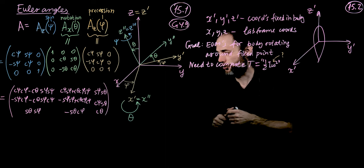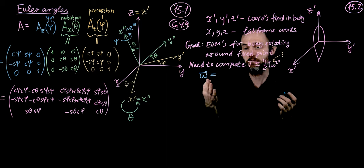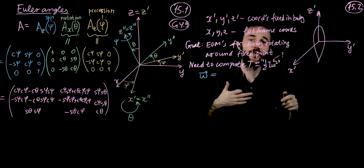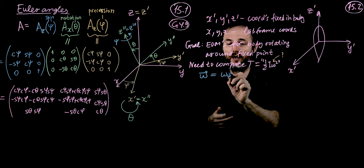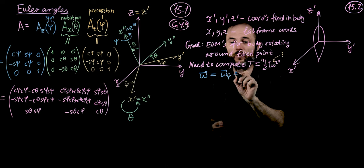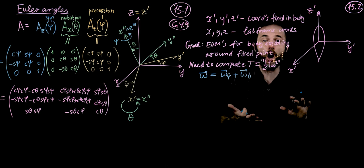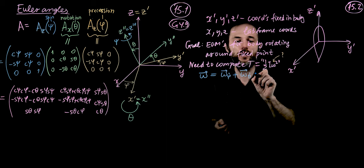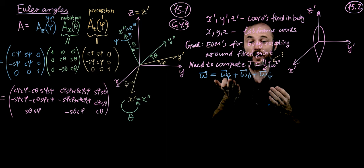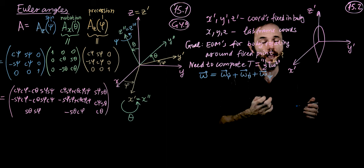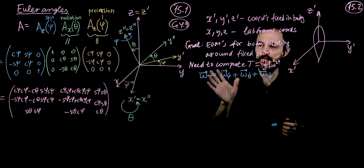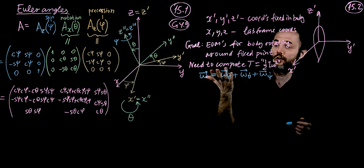We need to find what omega is in the primed coordinate system — the system moving with the body, not the lab system. We can break omega down into contributions from all three rotations: the contribution associated with phi, vector-added with the contribution from theta, and finally added with the contribution from psi, at angular rates phi-dot, theta-dot, and psi-dot. Because the system is linear, we sum them to get the net angular velocity vector omega.